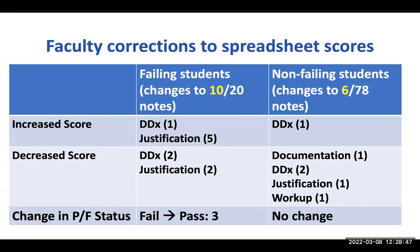We looked at places where faculty made changes — where the formula produced a score and faculty overrode it. Most changes happened among failing students: we had four failing students, five cases each, 20 notes total, and faculty made changes to 10 of those 20 notes. Some increased scores, some decreased. Overall, those changes meant three students who had failed now passed. For the 26 non-failing students, faculty made very few changes, and none resulted in any pass-fail change.